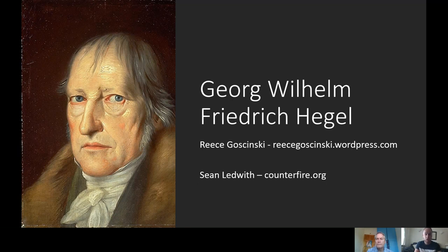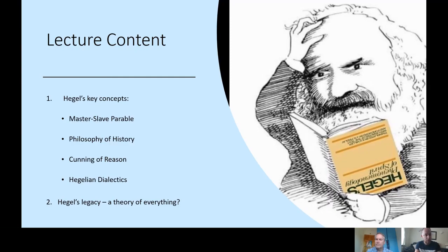Sean also writes a lot for Counterfire, which is a left wing website, and he posts a lot of book reviews and think pieces there as well. I strongly recommend that you check those out — they deliver content daily. This is part two, so Sean's going to be taking us through the key concepts of Hegel. We have the Master-Slave Parable, Hegel's Philosophy of History, the Cunning of Reason, and the concept of Hegelian dialectics.